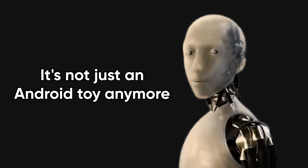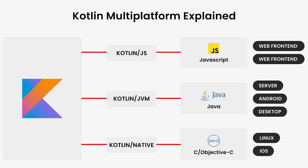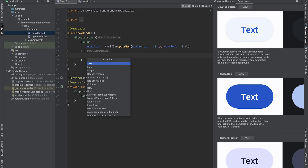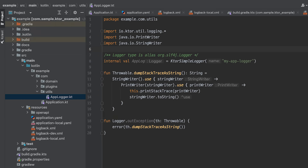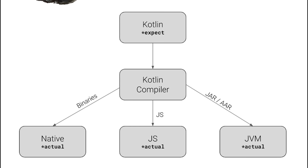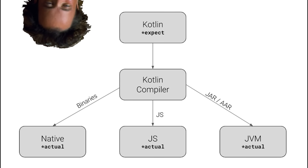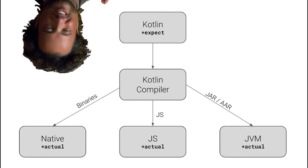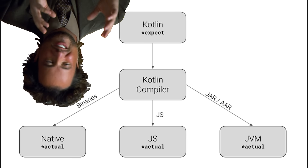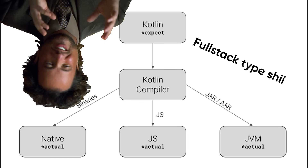But the real plot twist is Kotlin's reach. It's not just an Android toy anymore. Kotlin Multiplatform lets you share business logic between Android and iOS, and Compose UI with JetBrains Compose Multiplatform. Ktor is a lightweight Kotlin-native web framework that makes building backends clean and fast. Kotlin Native can compile to native binaries, and Kotlin runs on the JVM, on JavaScript via Kotlin.js, and on native targets. That's full-stack potential without learning five different languages.